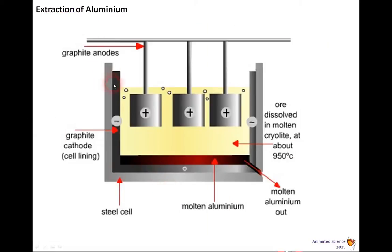And there's just an enhanced picture. You can see the carbon dioxide bubbling off, and the graphite anodes connected. And the electrons here, the negative in the steel cell.